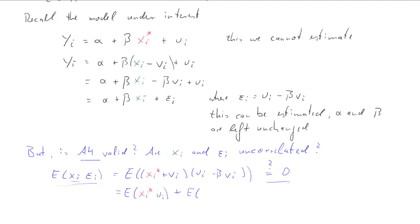So there are basically four terms here. The expected value of xi asterisk times ui plus the expected value of xi asterisk times negative beta vi. Now that negative beta is a constant coefficient so we'll actually move that in front of the expectation. So negative beta times expected value of xi asterisk vi plus expected value vi ui minus beta expected value of vi squared.